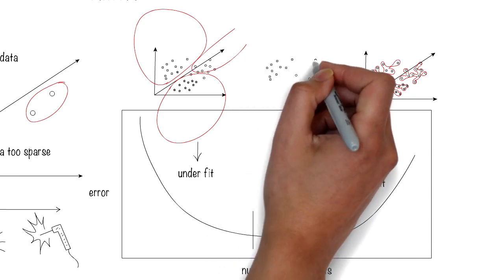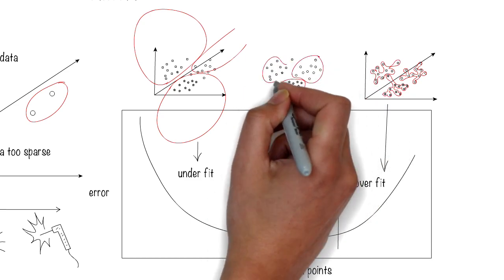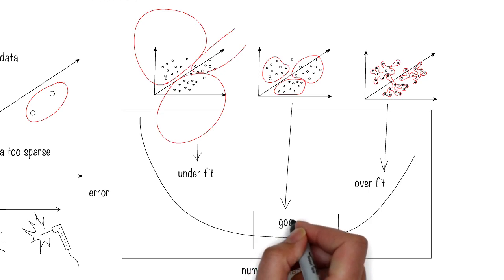The bottom line is that your data should represent the problem space well, both relevant as well as having a good distribution.